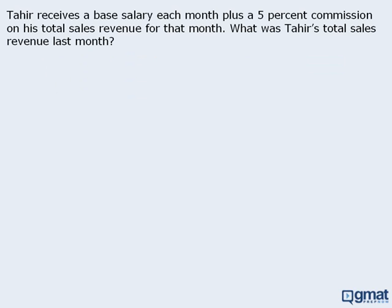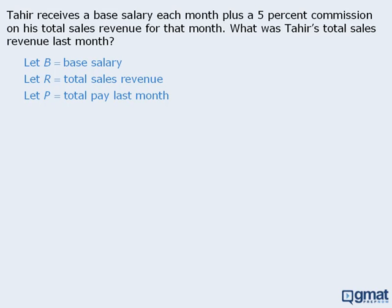One last example. Tahir receives a base salary plus 5% commission on his total sales revenue, and we want to determine his total sales revenue for last month. Let B equal Tahir's base salary, R equal his total sales revenue last month, and P equal his total pay last month. His commission is 5% of total sales revenue, so commission equals 0.05 times R. We can also say that P equals B plus 0.05R. The target question asks us to find Tahir's total sales revenue. We have now summarized all of the information, so we won't need to re-read this passage later.